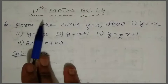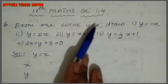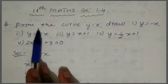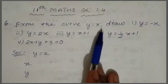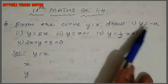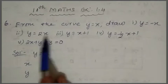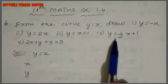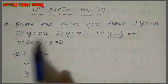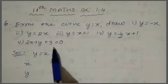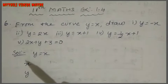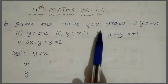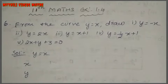Hi students, I am Maitli. This is 11th standard — max marks is 1.4 times 10th standard max. We have already done 5 sums. Now the 6th sum: from the curve y = x. So draw y = -x. This is the 1st subdivision. Then y = 2x, 2nd subdivision. y = x+1, 3rd subdivision. y = ½x+1, 4th subdivision. 5th: 2x + y + 3 = 0. So we have all equations and we have the graph from the curve y = x.